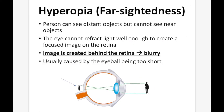Hyperopia, or farsightedness, is when people can see distant objects but can't see nearby ones. The eye cannot refract the light well enough to create a focused image on the retina — the image is created behind the retina and is blurry, usually caused by the eyeball being too short. So the image being created on the retina is going to be blurry.